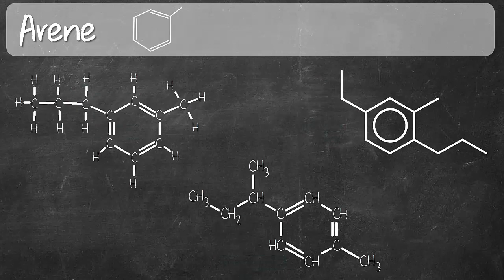Moving on, we have arene. Arene is an aromatic compound. At introductory chemistry level, the arene that you'll encounter will be benzene ring. So that consists of six carbons with alternating double and single bonds. And you can see in these examples here, I've shown you different ways that you can represent benzene ring.